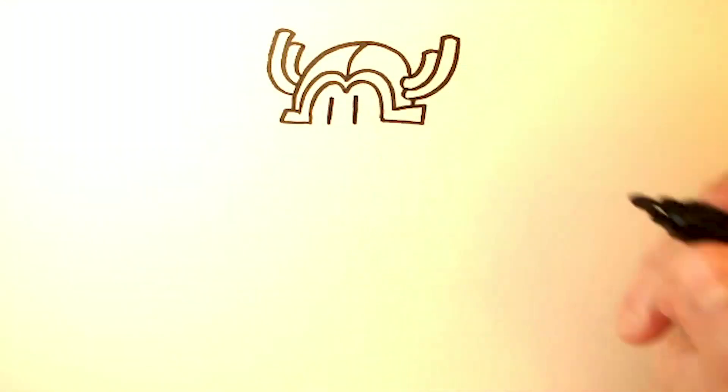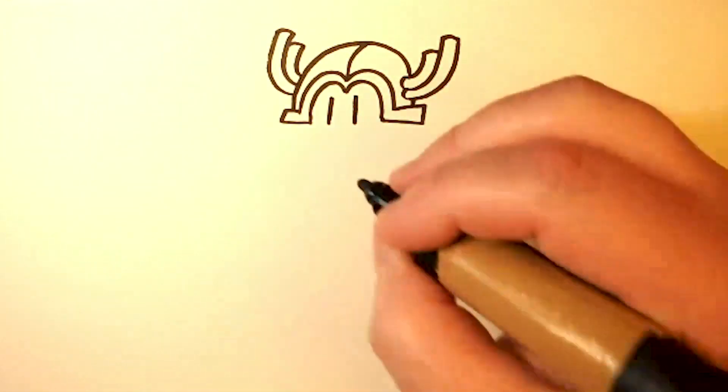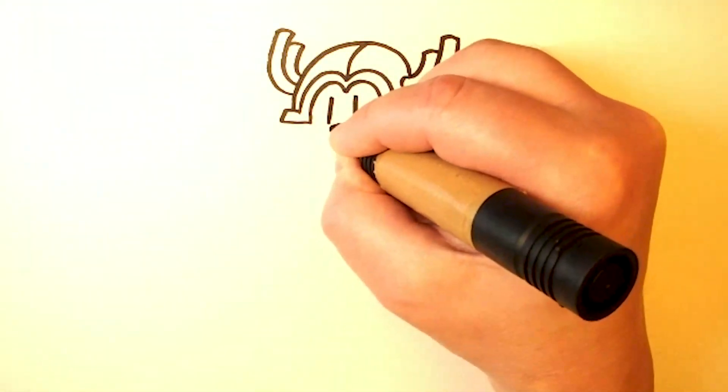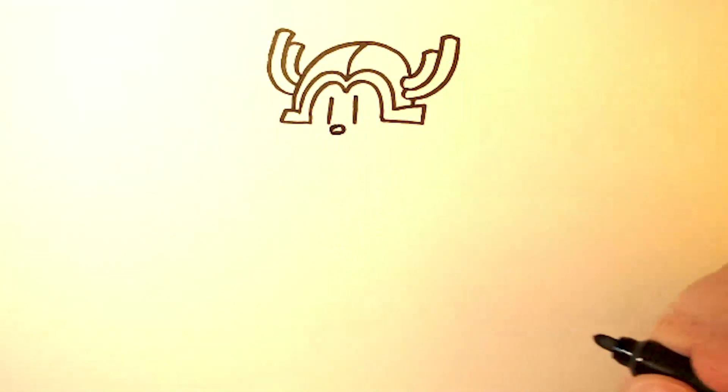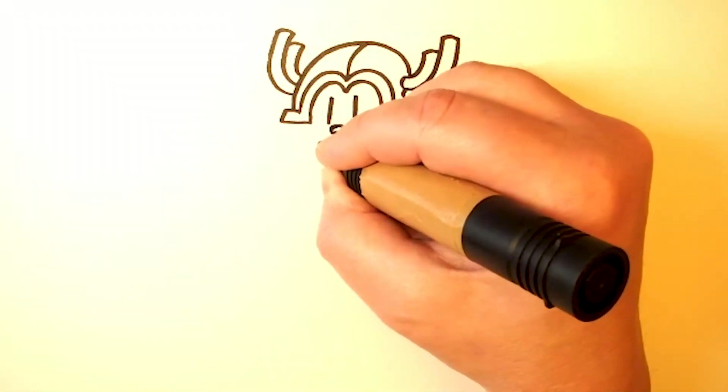Okay, now two lines over here for eyes, and then a little circle for the nose. We go down, and a little smile.